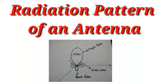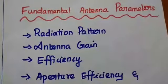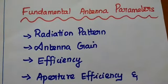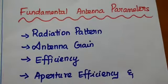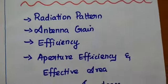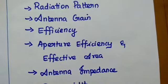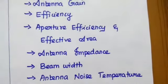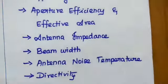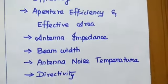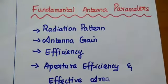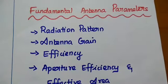Dear students, now we are going to discuss about radiation pattern of an antenna and its characteristics. There are some parameters which are mainly used to analyze the characteristics of an antenna. These are the fundamental antenna parameters: radiation pattern, antenna gain, antenna efficiency, aperture efficiency and effective area of the aperture, antenna impedance, beam weight, antenna noise temperature, directivity and radiation intensity. Let's discuss about the radiation pattern in this video.